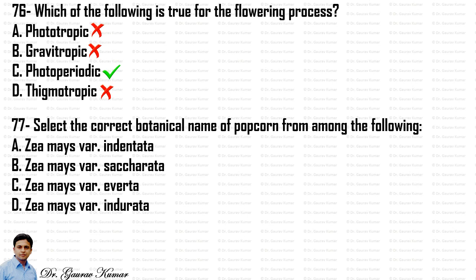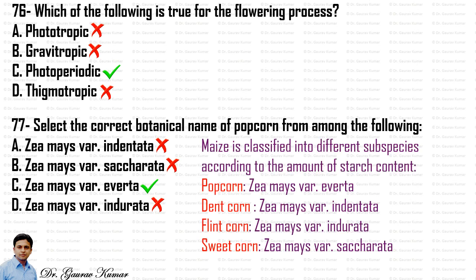Select the correct botanical name of popcorn from among the following. Zea mays variety Everta is the botanical name for the common popcorn. Maize is classified into different subspecies according to starch content. Dent corn is Zea mays variety Indenta, flint corn is Zea mays variety Indurata, and sweet corn is Zea mays variety Saccharata. This you have to remember.